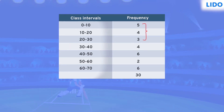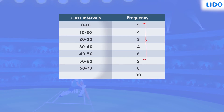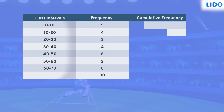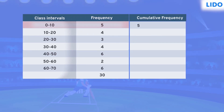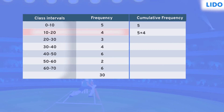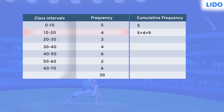The cumulative frequency is calculated by adding each frequency from a frequency distribution table to the sum of its predecessors. Let's try to find the cumulative frequency. The cumulative frequency for the starting class 0 to 10 remains the same. The cumulative frequency for the next class, i.e. 10 to 20, will be the sum of the frequency of the preceding class and the frequency of the succeeding class — the sum of 5 and 4, which equals 9.